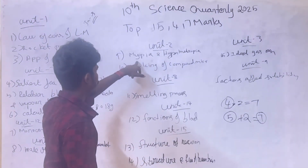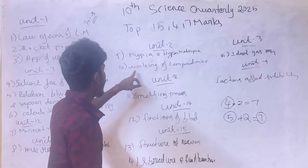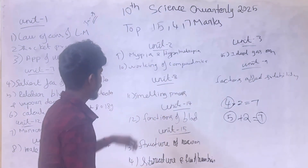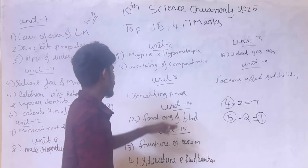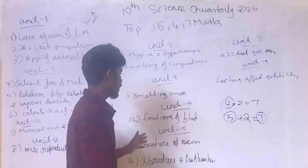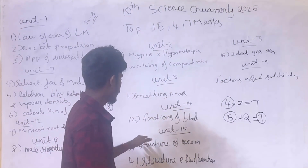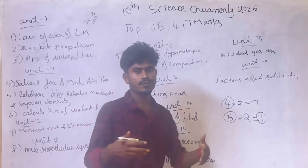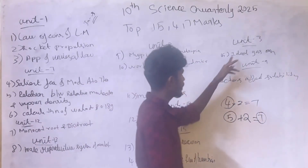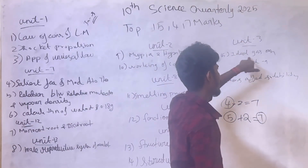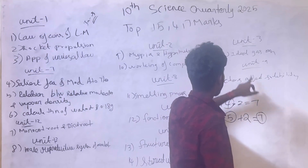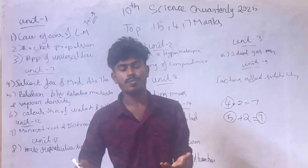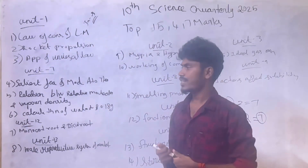Unit 2: myopia and hypermetropia. Working of a compound microscope. Unit 8: smelting process. Unit 14: functions of blood. Unit 8: structure of neuron and structure and functions of blood. Unit 3: ideal gas equation. Unit 9: factors affecting sound propagation. And mass and weight — differentiate.